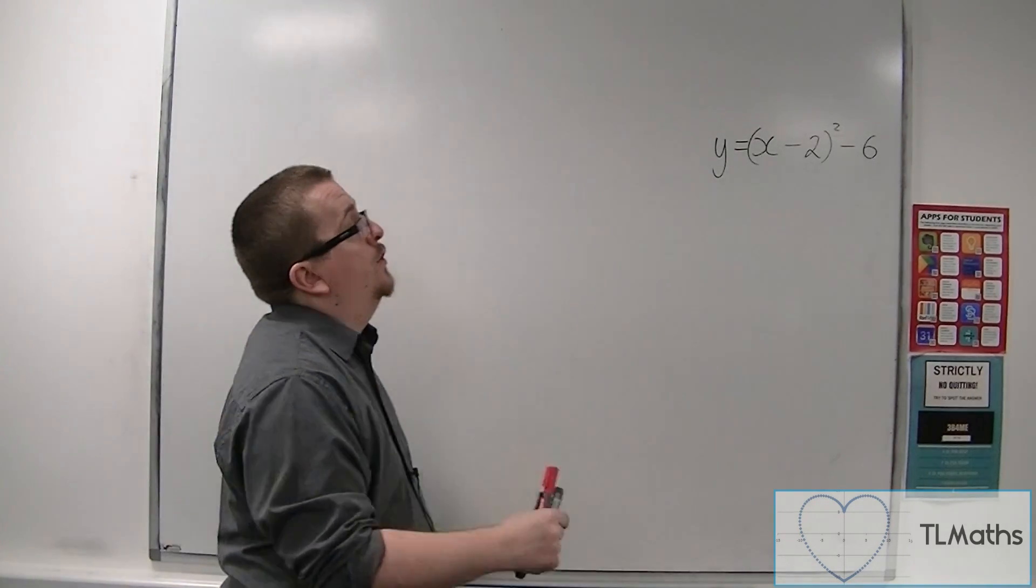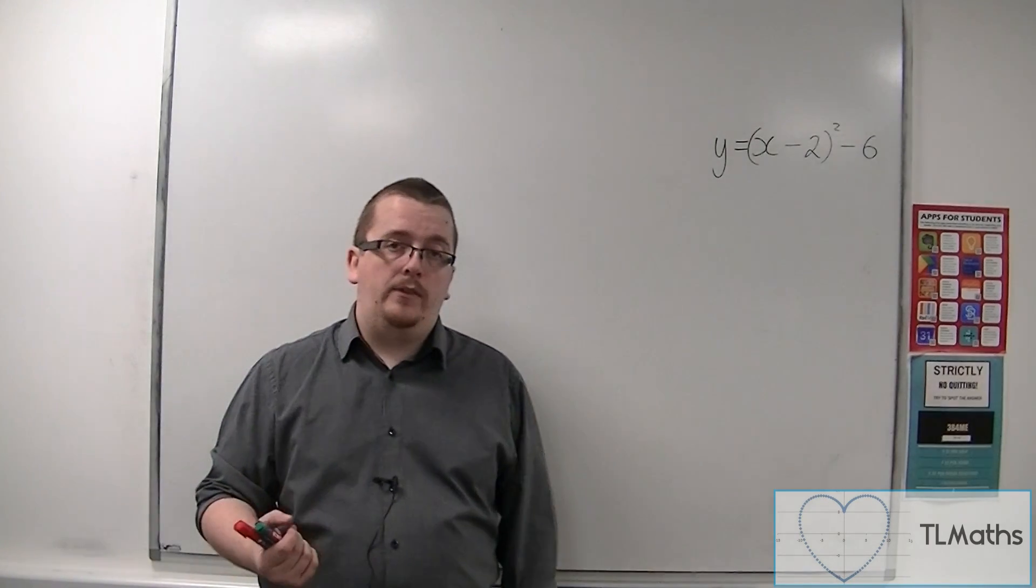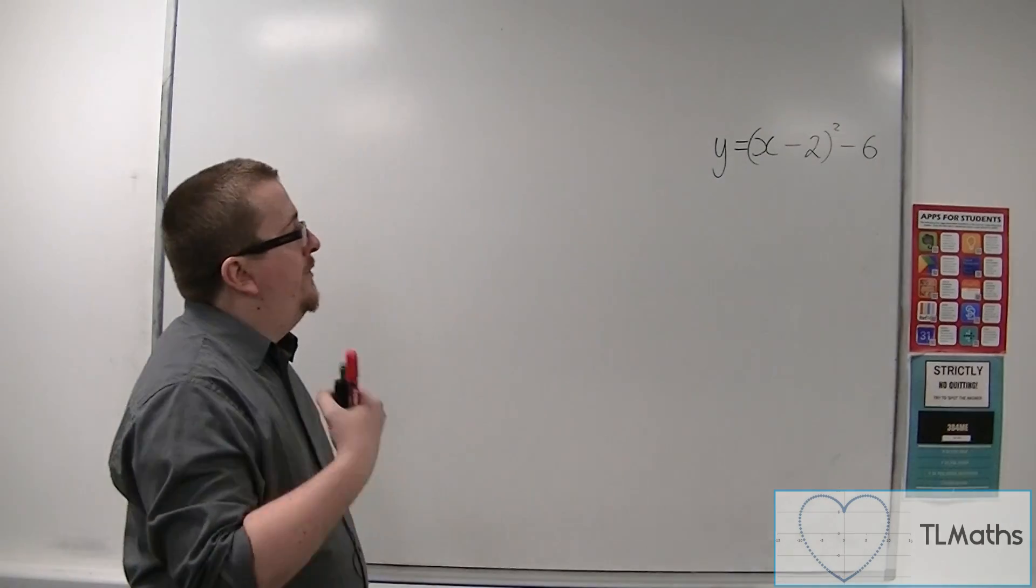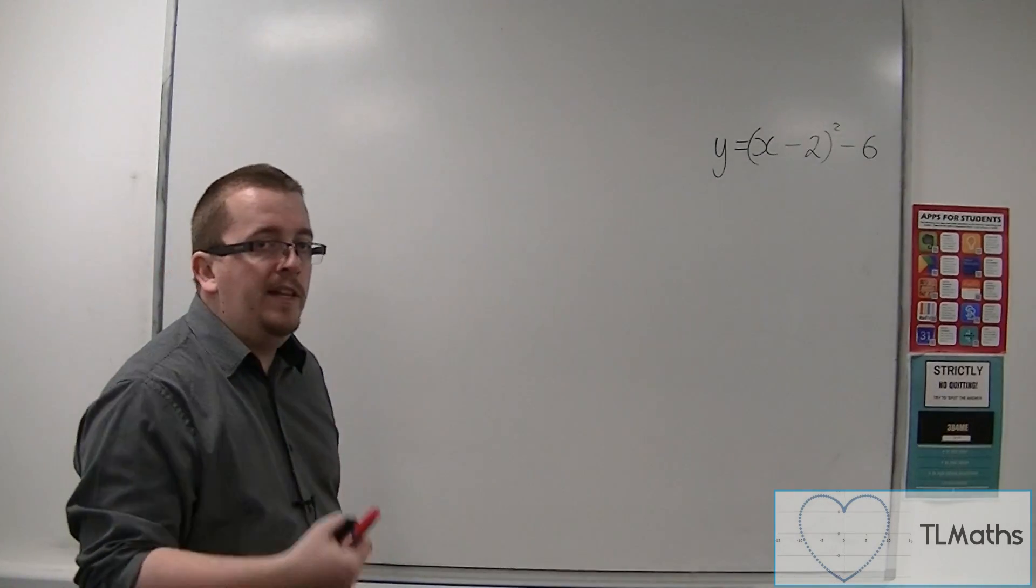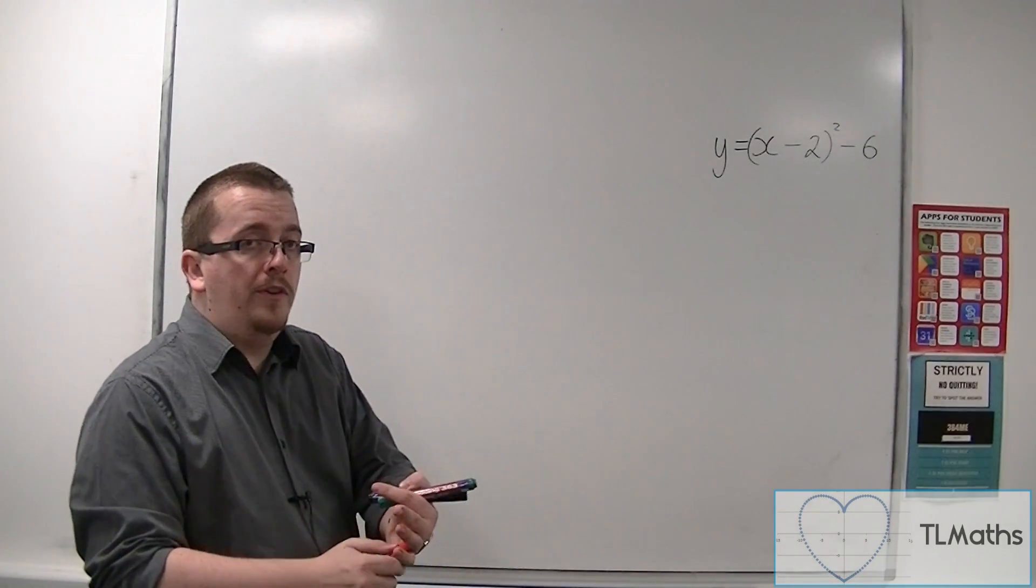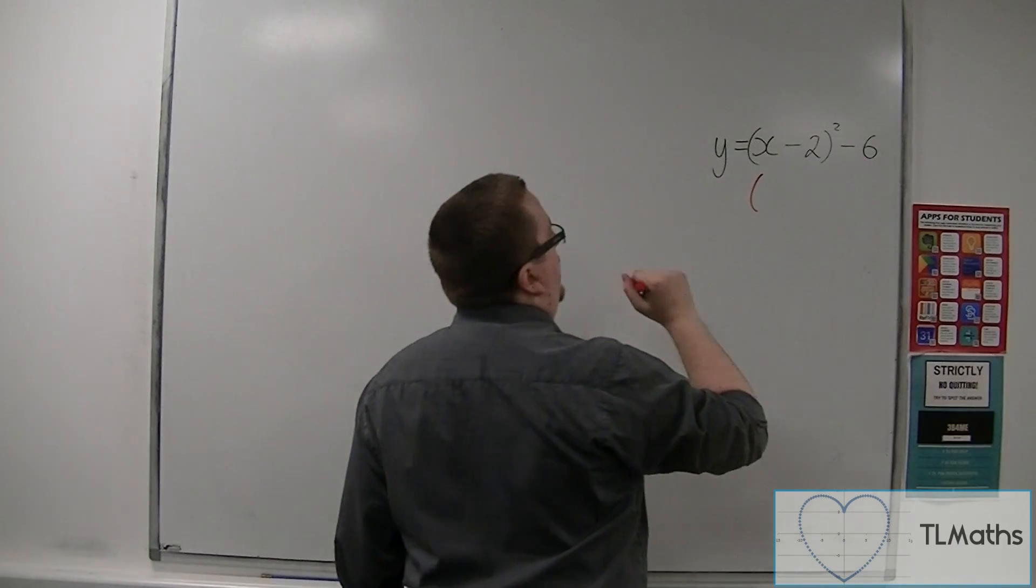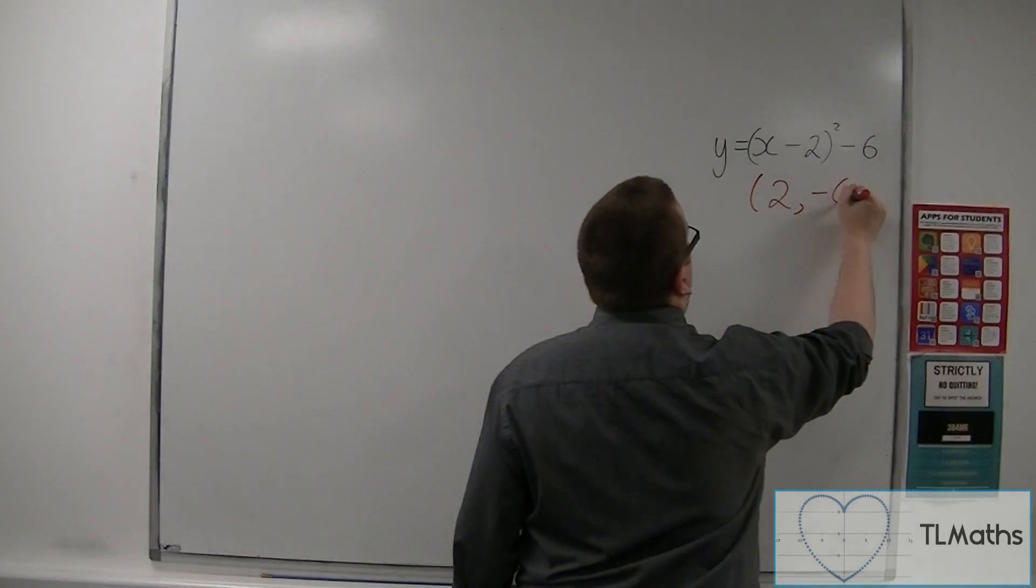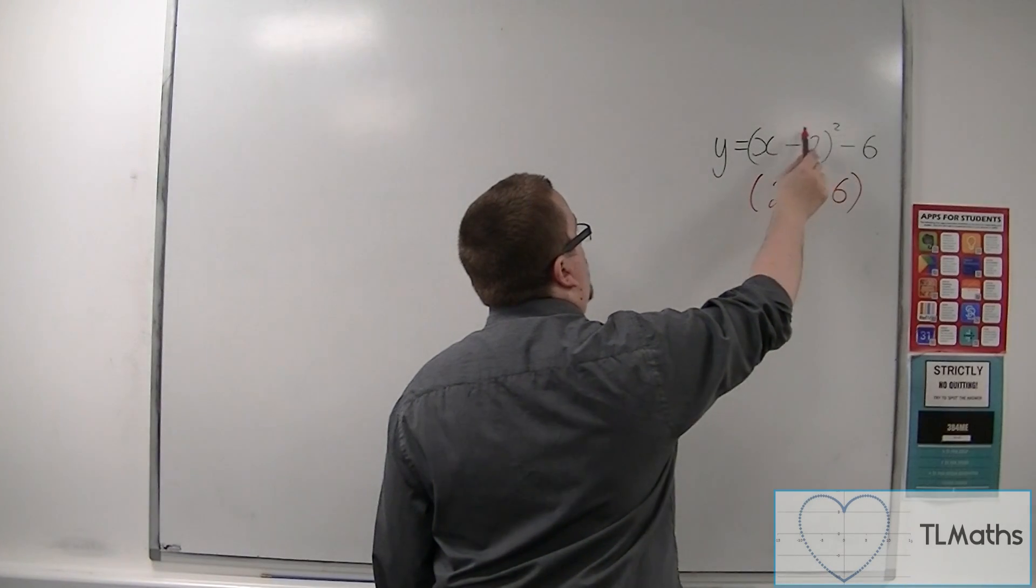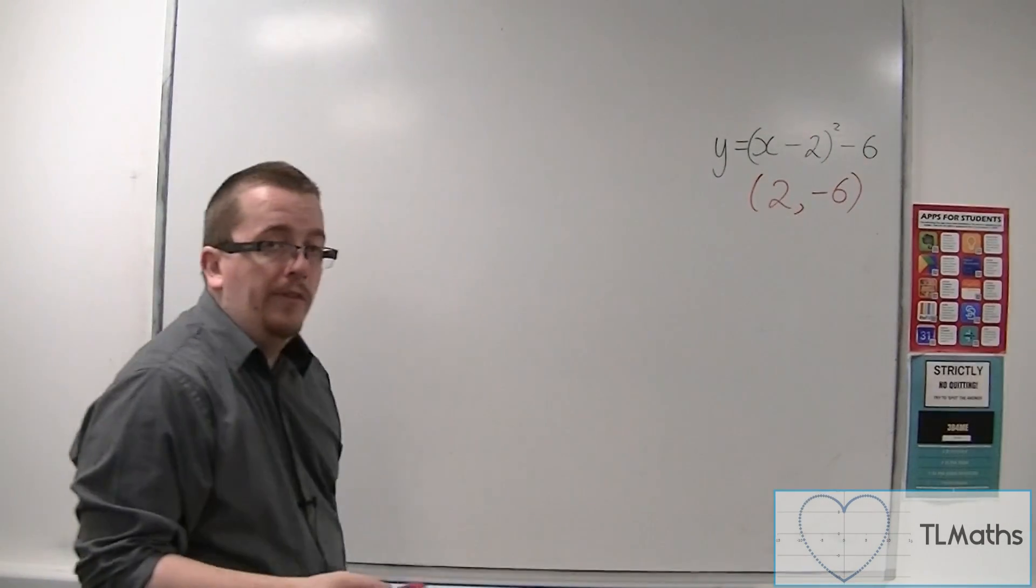Let's have a look at the graph of y equals x minus 2 squared, take away 6. So what I've done is I have already put it into completed square form. And so we're able to write down the coordinates of the vertex. The coordinates of the vertex for this would be 2 minus 6. So the number inside the bracket changes sign and the number outside the bracket remains the same.